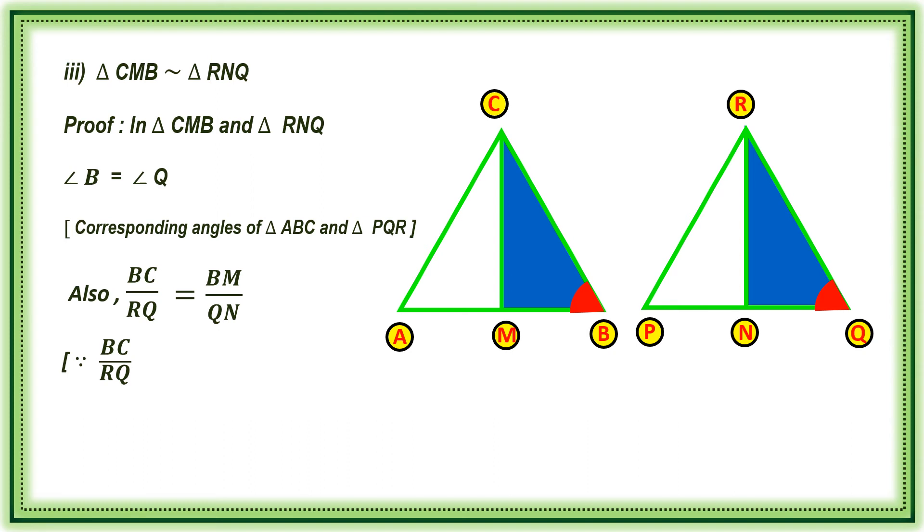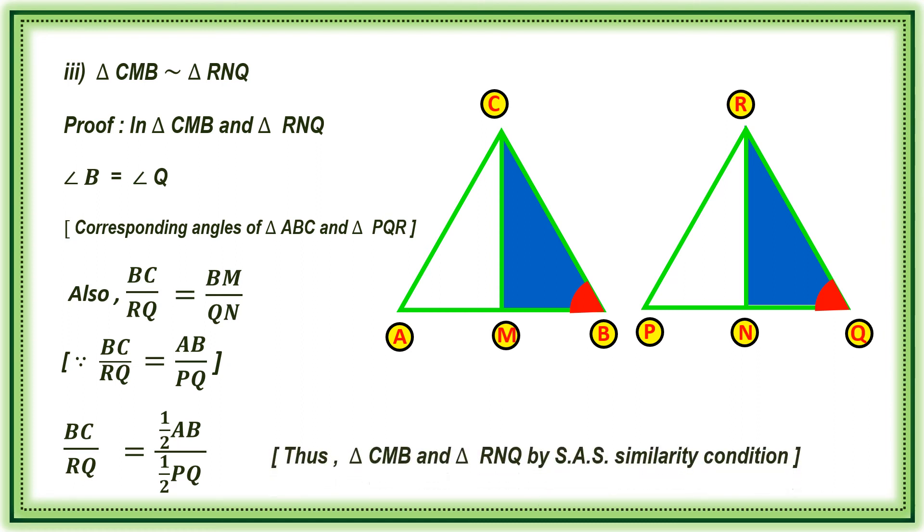Since BC by RQ is equal to AB by PQ, BC by RQ is equal to half AB by half PQ. Thus, triangle CMB and triangle RNQ by S.A.S., side angle side similarity condition.